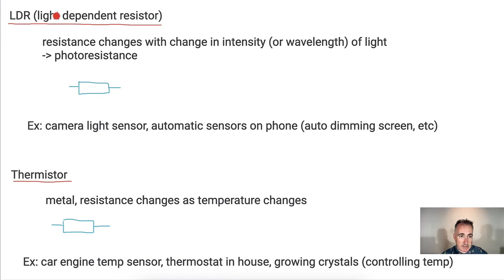Now if we have a light dependent resistor, LDR for short, that's when the resistance changes depending on what kind of light is shining on it - the intensity or the wavelength of it. It's called photoresistance. What happens there is I just imagine it's like a light falling onto it, so there's like two arrows coming onto it. That's my light coming onto it. For example, camera light sensors, on your phone you have automatic light sensors for dimming your screen, all that stuff.